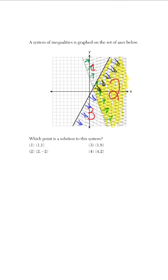Any point in that area is going to be a solution. For point (1,1) — shown here in purple — it's not a solution because it only satisfies one line. When we check (2,-2), that's down here in purple and also only satisfies one line. When we check (1,8), that's up in the top region, which only satisfies one equation. The correct answer is choice four: when x is 4 and y is 2, that point falls right here in the solution area, as you can see from this last dot.